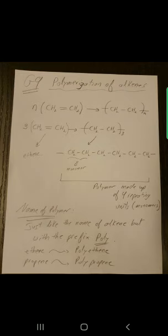Now, for example, if you have ethene as a starting alkene, when it becomes a polymer, it becomes polyethene. If you have propene and then it becomes a polymer, it becomes polypropene.